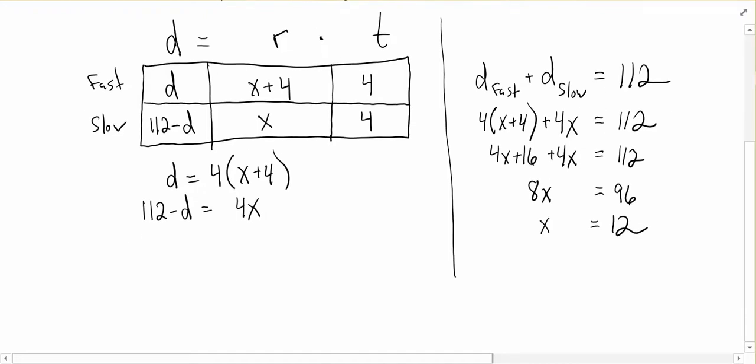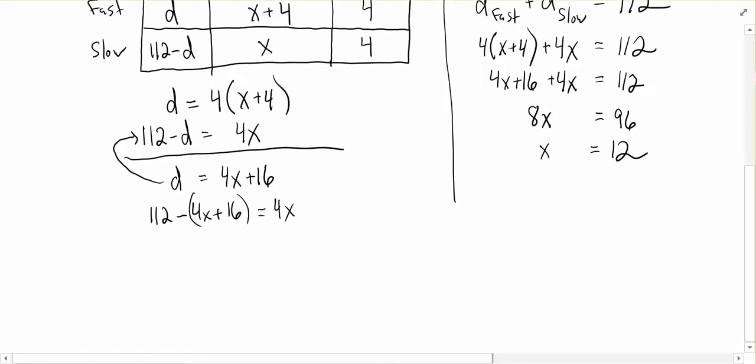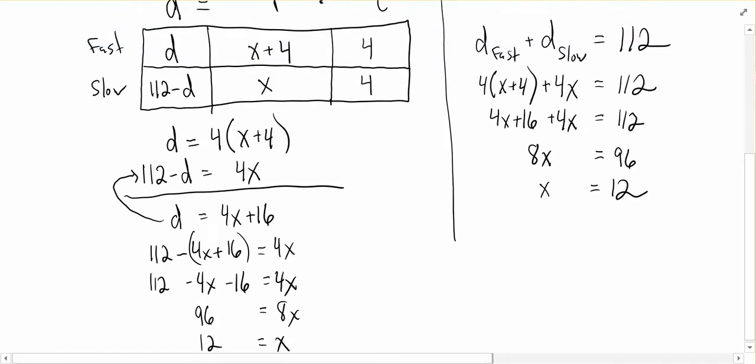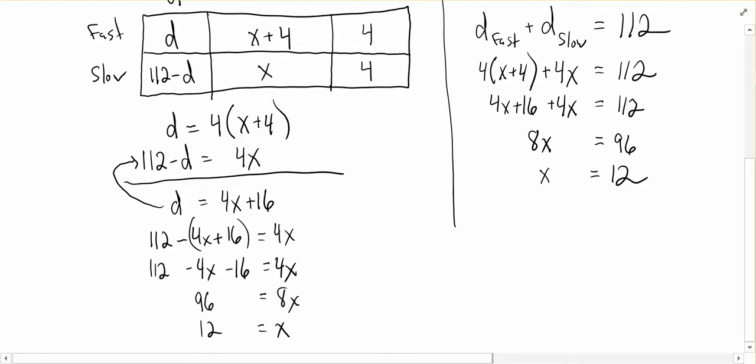Now we could go ahead and do that over here as well, and what we can see is that we're going to end up doing something very similar, which is a little bit more moving around. If I distribute the 4, I could then use substitution to plug it in over here. 112 minus 4X plus 16. Oops, hold on. 4X plus 16 equals 4X. I could distribute the negative. I could combine like terms and add the 4X to the other side. I'm going to end up getting the same answer with a system of equations. I just want to point out there's two different ways you could kind of look at this problem and come up with the same answer.